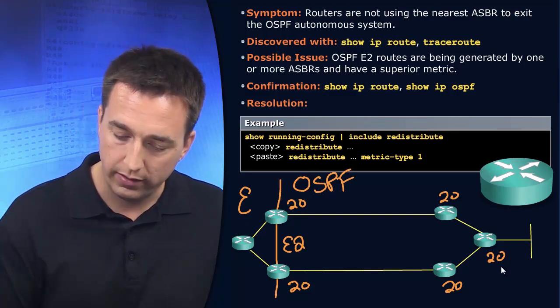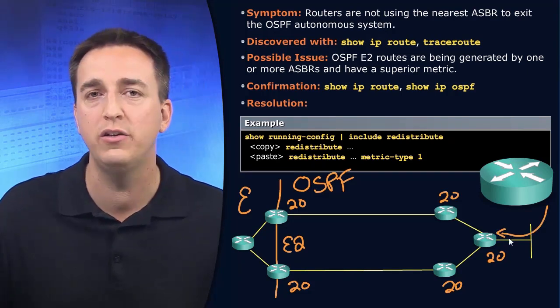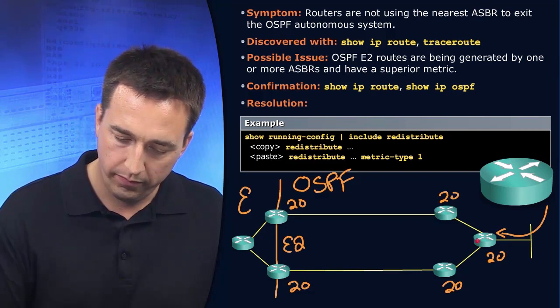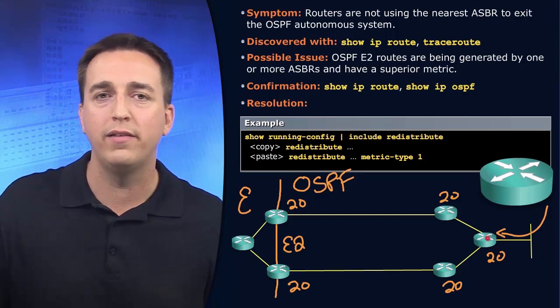Let's say traffic arrives inbound right here, destined for the EIGRP domain. The router sees that there are really two different paths that can be utilized.